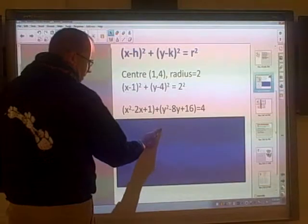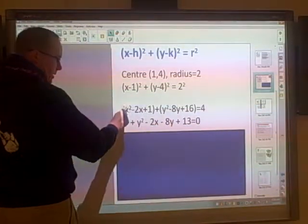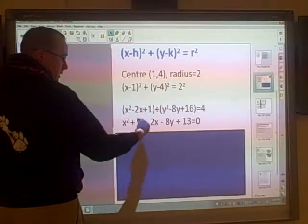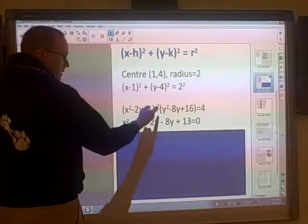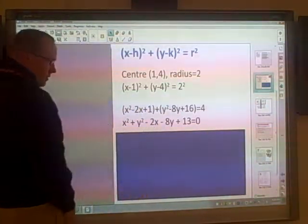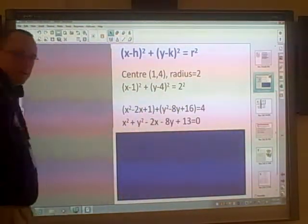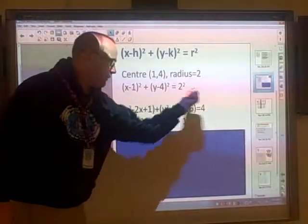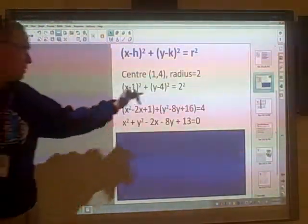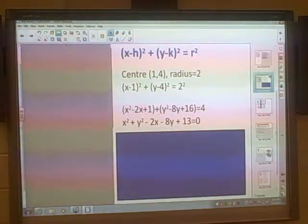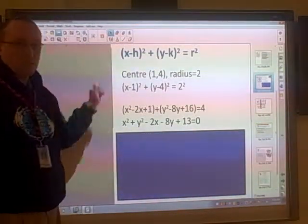And then the order that we like to do this is we like to do the powers first. So we like to do x² + y². Then we like to do the x's and the y's. So in alphabetical order as well, so -2x plus -8y is -8y. And then what we have here is 1 + 16 is 17. Bring the 4 to the side so it becomes -4. Plus 13 equals 0.